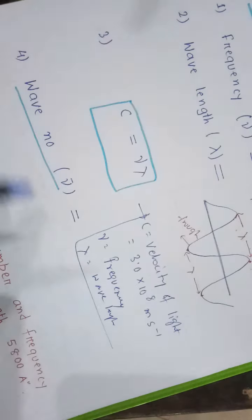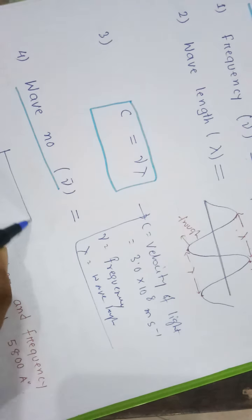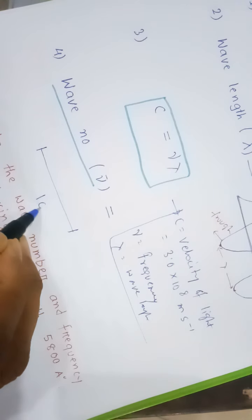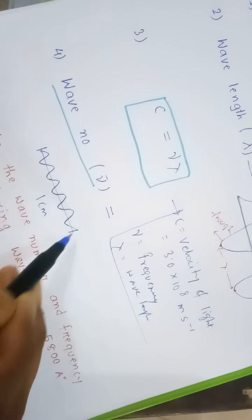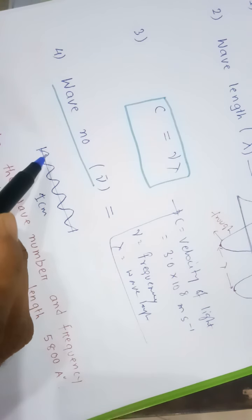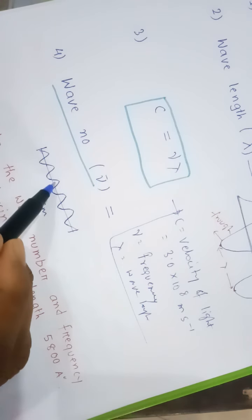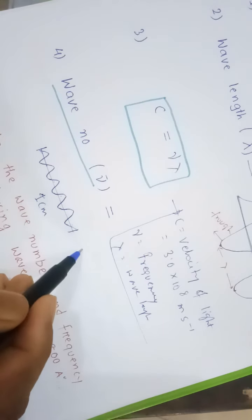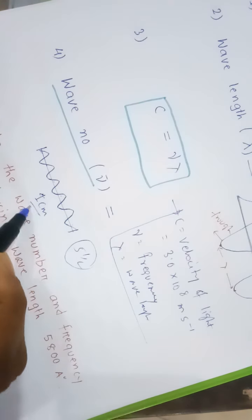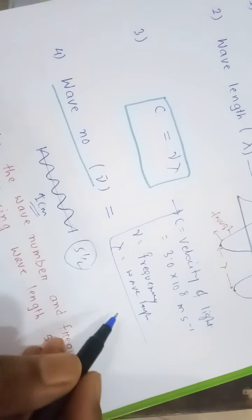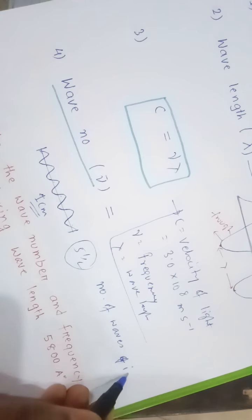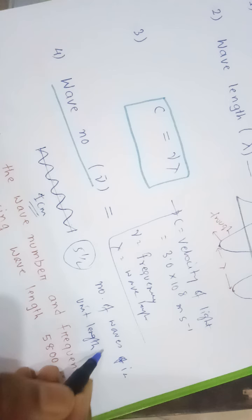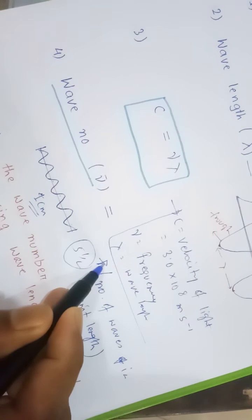The next term is wavenumber. Wavenumber is defined as the number of waves in unit length. For example, if we take one centimetre, we count how many waves are generated in that length — one, two, three, four, five — that count is the wavenumber. So wavenumber is the number of waves in unit length.